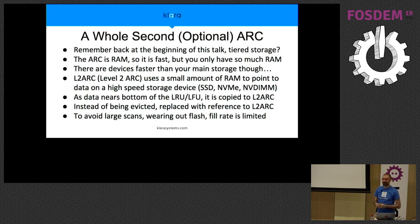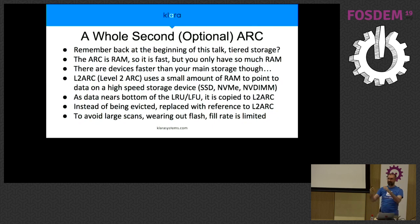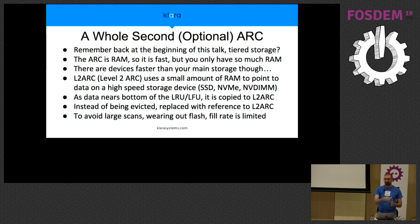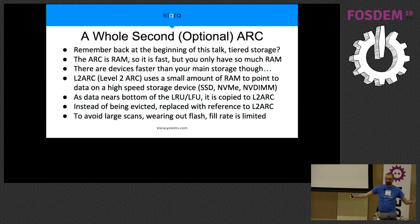ZFS doesn't stop there. You only have so much memory, and sometimes it's physically not possible to install more. So ZFS has a Level 2 Adaptive Replacement Cache, allowing you to use a fast storage device like an NVMe or SSD to cache data even when running out of memory. Rather than waiting until it's about to kick an item out, it watches the bottom third of the two lists, and as an item gets close to being evicted, we copy it and write it to the SSD. We keep the hash and a pointer saying this data is now on this SSD at this address.